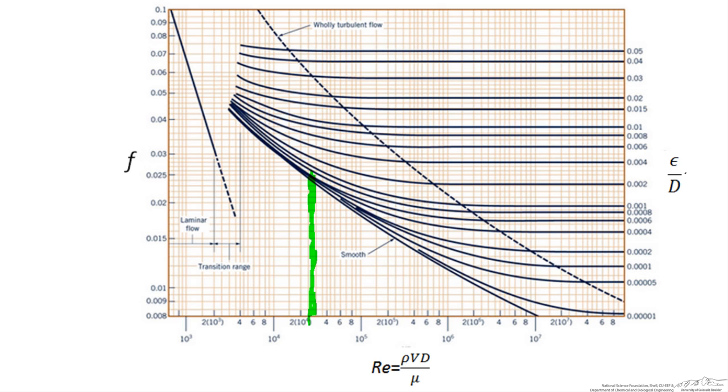So our roughness factor for our copper pipe can be looked up in a table and found to be 5 times 10 to the minus 6 feet. Our diameter we already converted into feet as 0.0833 feet. This gives us a relative roughness factor of 6 times 10 to the minus 5, which falls right above this line of 5 times 10 to the minus 5. So if we follow those up until they intersect we get a frictional factor of about 0.024.